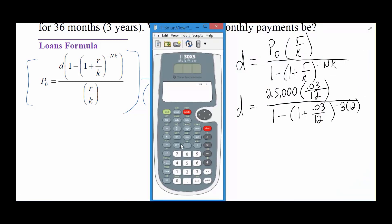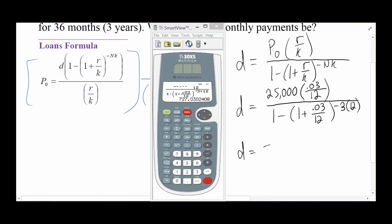We already have practice typing this kind of formula in because we did the same thing with payout annuities. So we're just going to start off with a fraction: 25,000 times 0.03 over 12. Go down to the bottom for our 1 minus 1 plus 0.03 times 0.03, fraction 12. Get out of the bottom, get an exponent with negative 3 times 12.